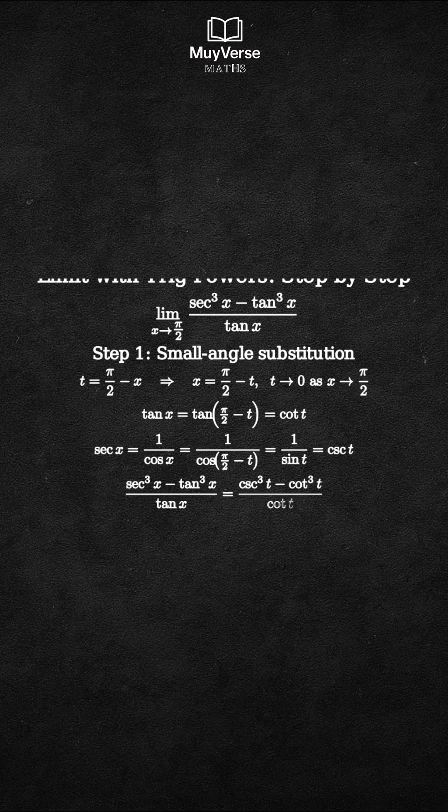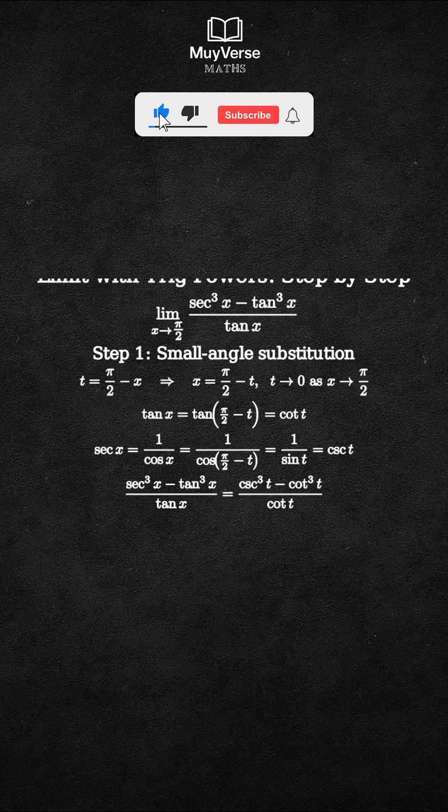Therefore, sec³x becomes csc³t, tan³x becomes cot³t, and the denominator tan x becomes cot t. So the expression becomes (csc³t - cot³t) over cot t.